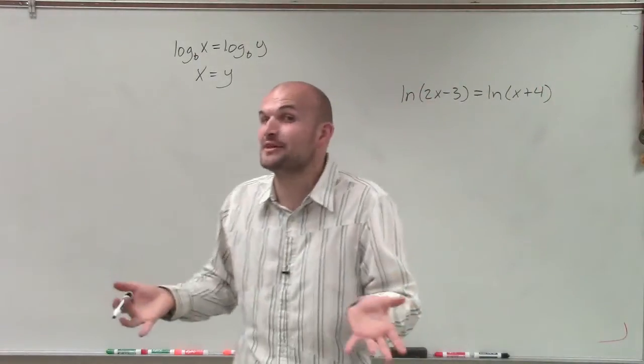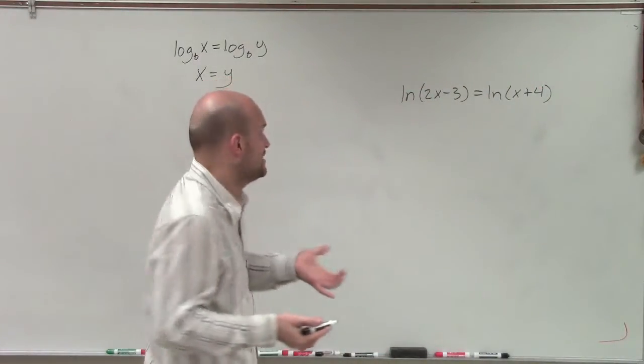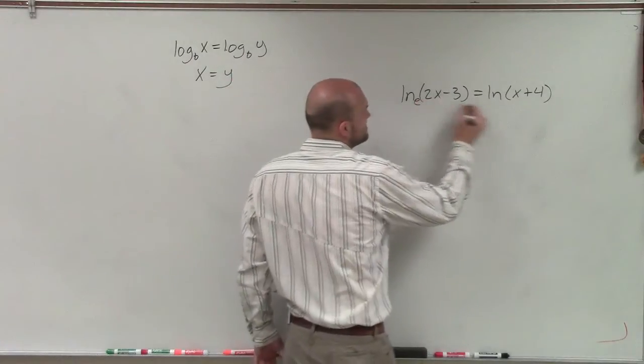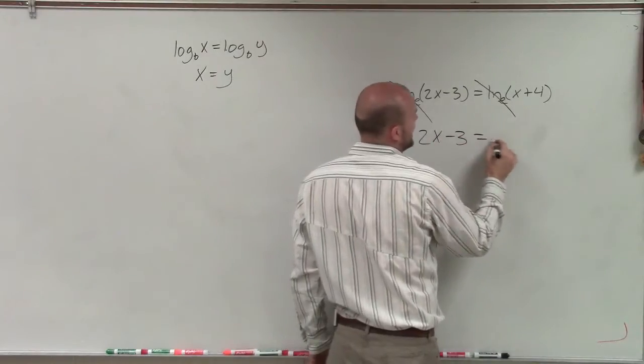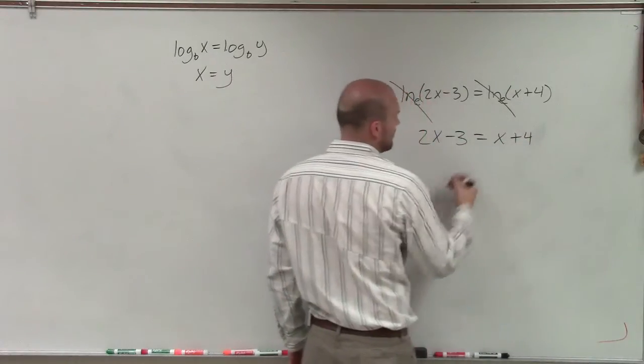And what that states is it doesn't matter the logarithm as long as I have the same base. Well, remember, for natural logarithms, these both have a base e. So therefore, we know that 2x minus 3 has to equal x plus 4.